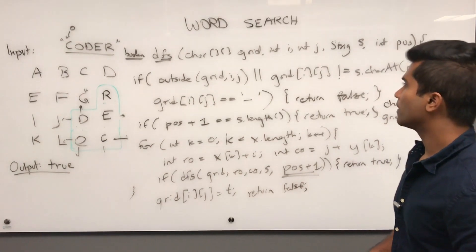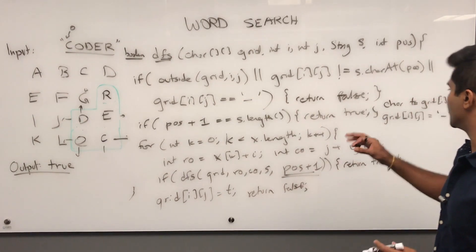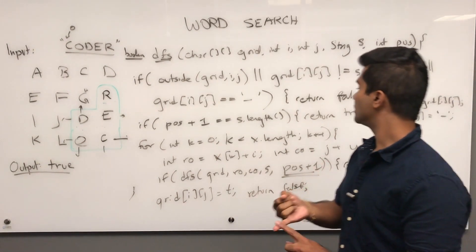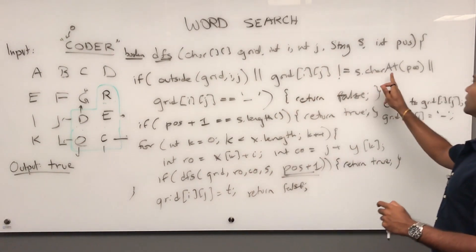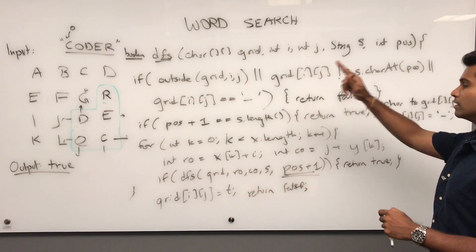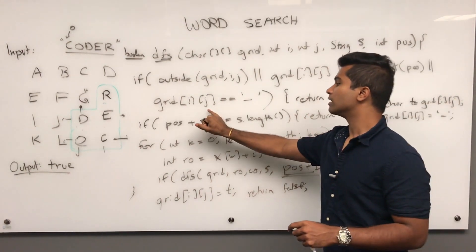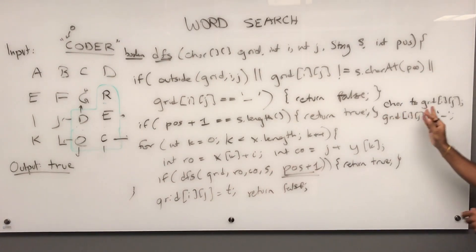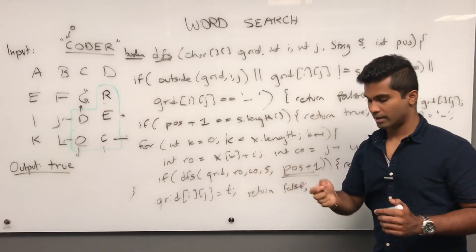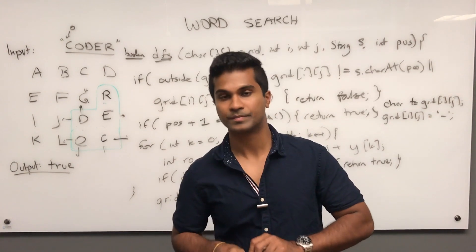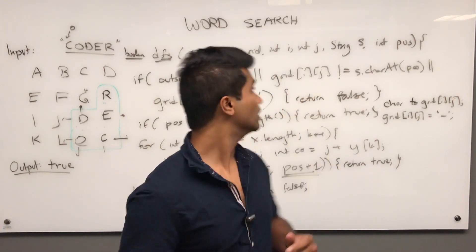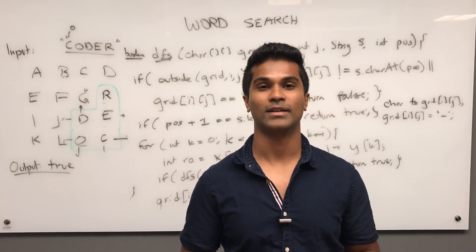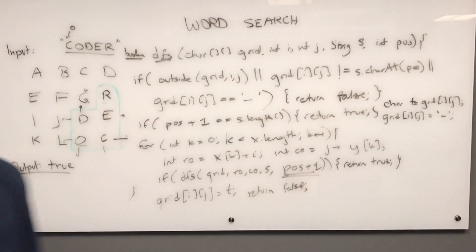So that's it — we took care of going outside bounds, making sure the letter matches what we need in the string, and keeping track of visited letters by temporarily putting in a hyphen and restoring it when done with the recursion. That's how you solve word search. Thank you for watching!